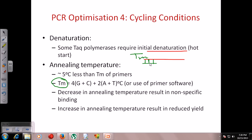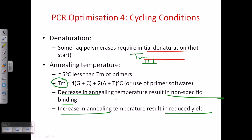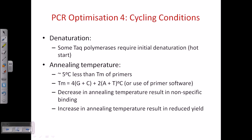Decrease in annealing temperature results in non-specific binding; increase in annealing temperature results in reduced yield. The margin of error is very small — even a slight increase or decrease in temperature leads to bad effects. Temperature must be maintained in a very balanced way.